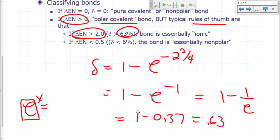So it's 1 minus 0.37. So that's about 0.63. So you say 0.63 would be 63% ionic. So what we call a 63% charge transfer from one atom to another, we say that bond is essentially ionic. That electronegativity difference is big enough so we can say that the bond is essentially ionic.